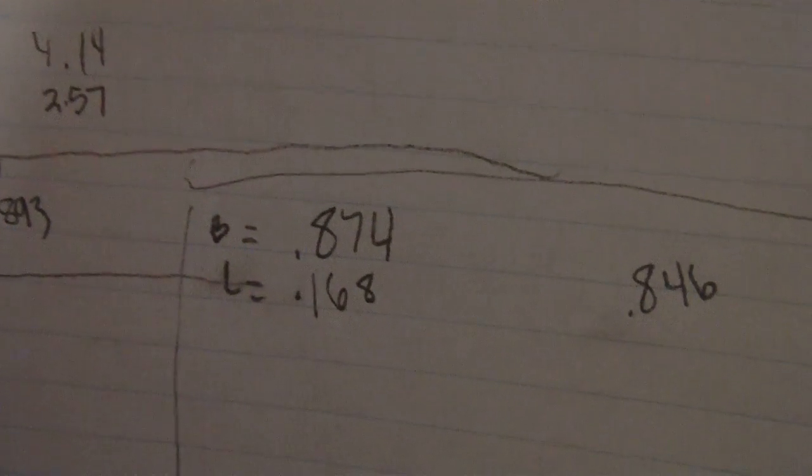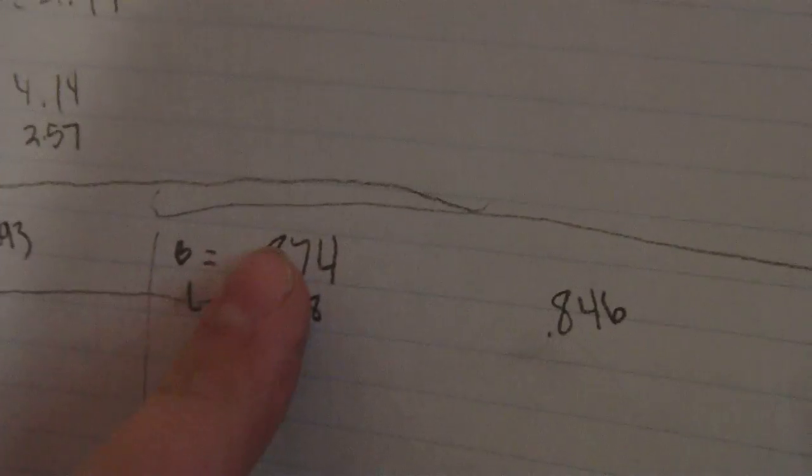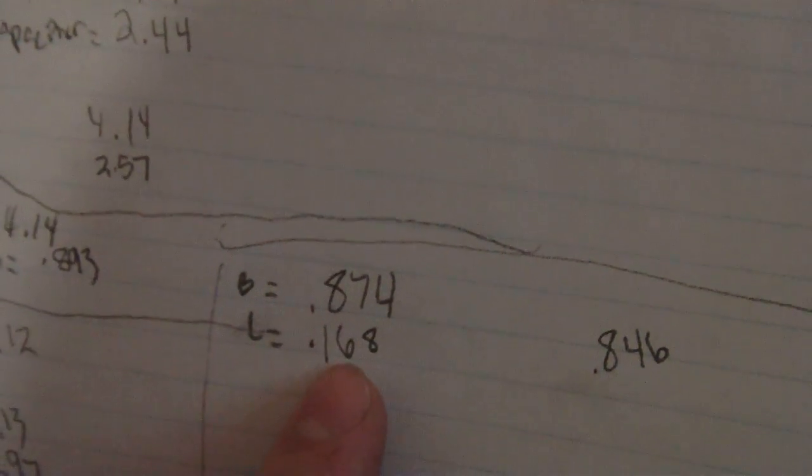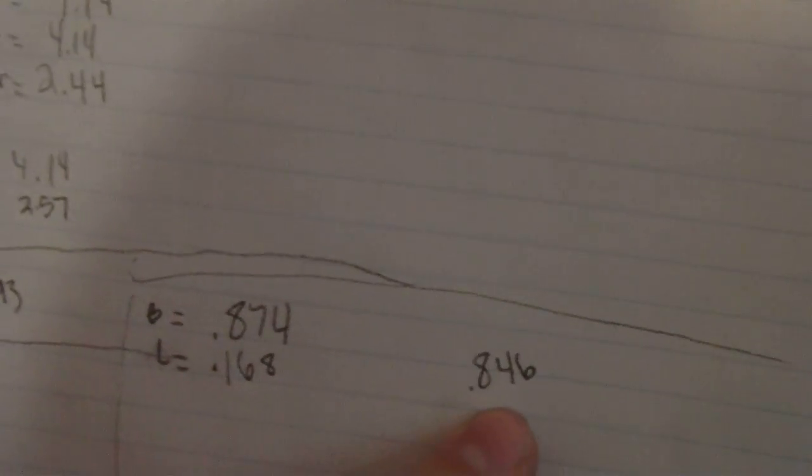That don't make sense. This power should be going to this littler one and to charge this one up. And it did and that's what they both were at, 0.846, that's what they leveled out to. But they didn't stop there, they kept going up.